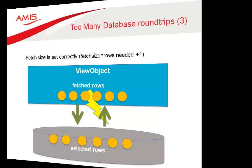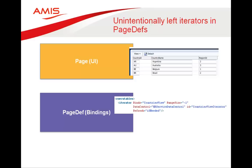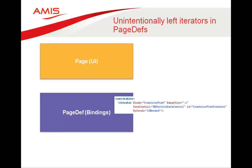Another item in the too often category is unintentionally left iterators in page definition files. Suppose a developer creates a country table, with corresponding bindings and iterator in the page definition. Later he removes the table but forgets to also remove the iterator from the page definition, and unfortunately leaves the refresh attribute at 'if needed.'